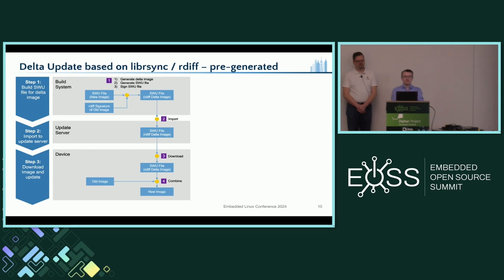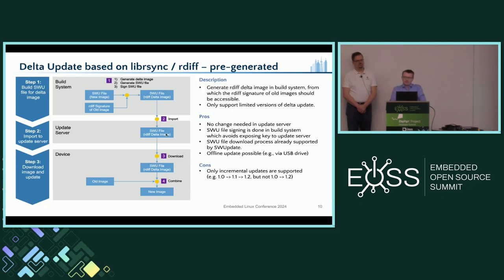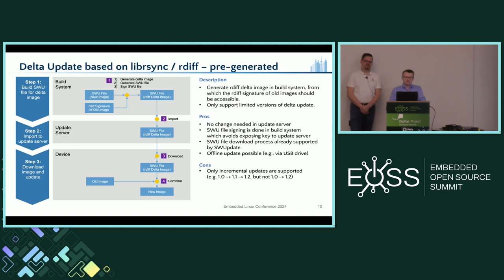One important detail: you need to combine the old image and the delta file to generate the new image on-device. This is different from regular rsync because you have two partitions — the currently running partition and the partition you want to update for the next reboot. You need to create the new image on the currently non-active partition based on the old image (which is in the running partition, read-only) together with the delta.